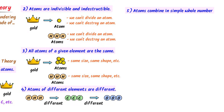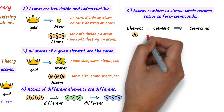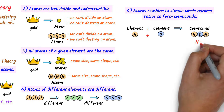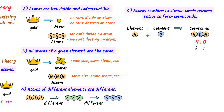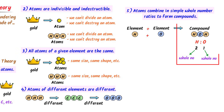Fifthly, atoms combine in simple whole number ratios to form compounds. This is a little bit difficult point, but let me explain it. When two elements combine together, they form a compound. For example, hydrogen and oxygen combine together to form water. We can see that there are two atoms of hydrogen and one atom of oxygen — both two and one are whole numbers. Thus, in a compound like water, the ratio of atoms is always a whole number.